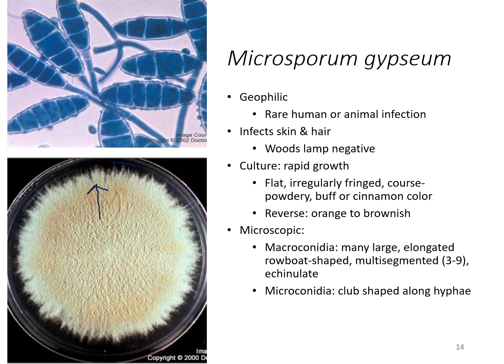You can see this one has a little bit of a cinnamon tinge to it. The reverse side would be orange to brown. The macroconidia are very large, elongated, and look like little rowboats — maybe old-fashioned type rowboats. They are multi-segmented with three to nine septa separations. They are echinulate — you can see those little prickly spines on the edge. The microconidia are club-shaped along the hyphae.